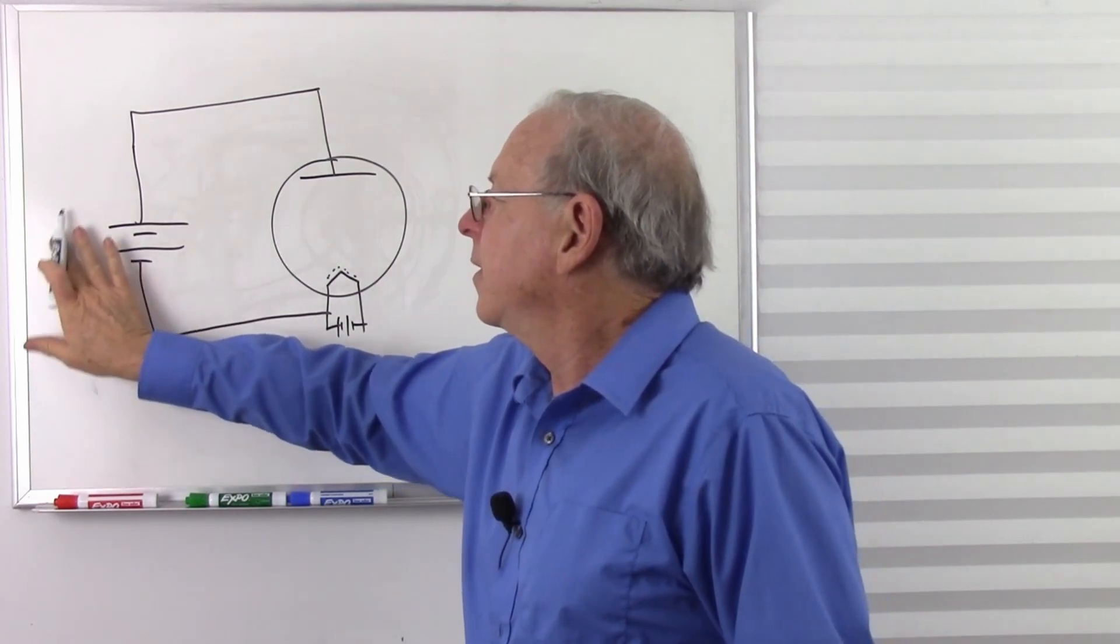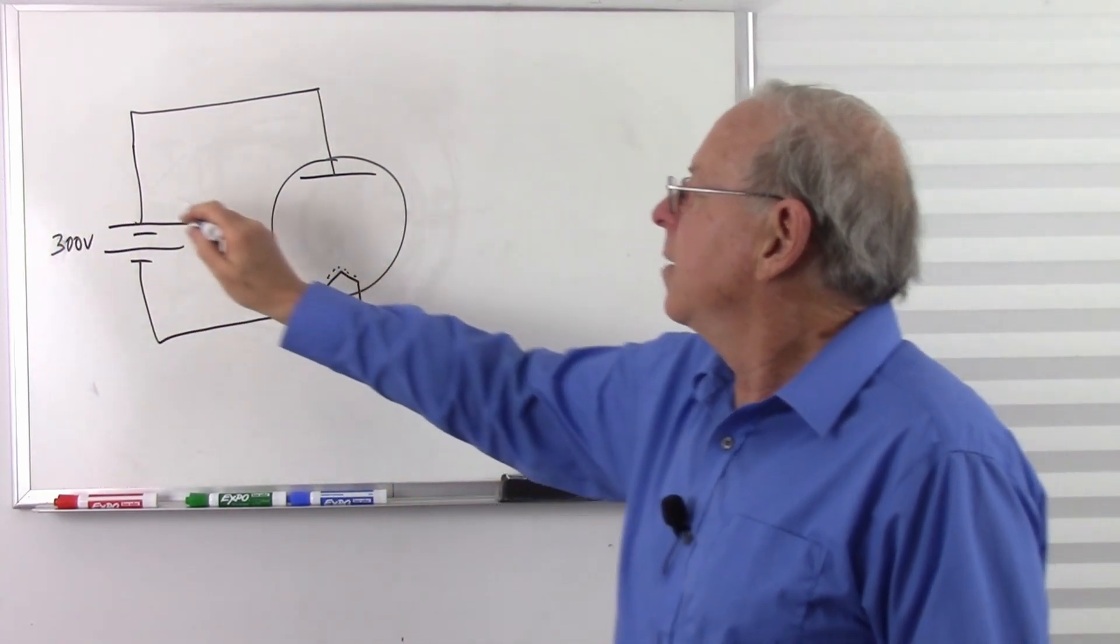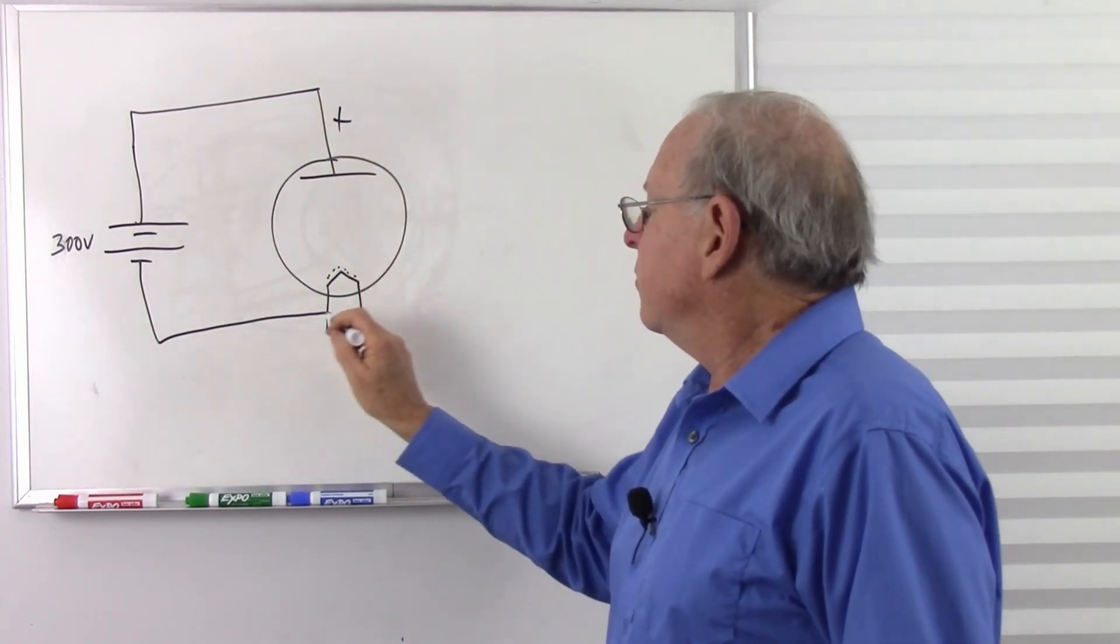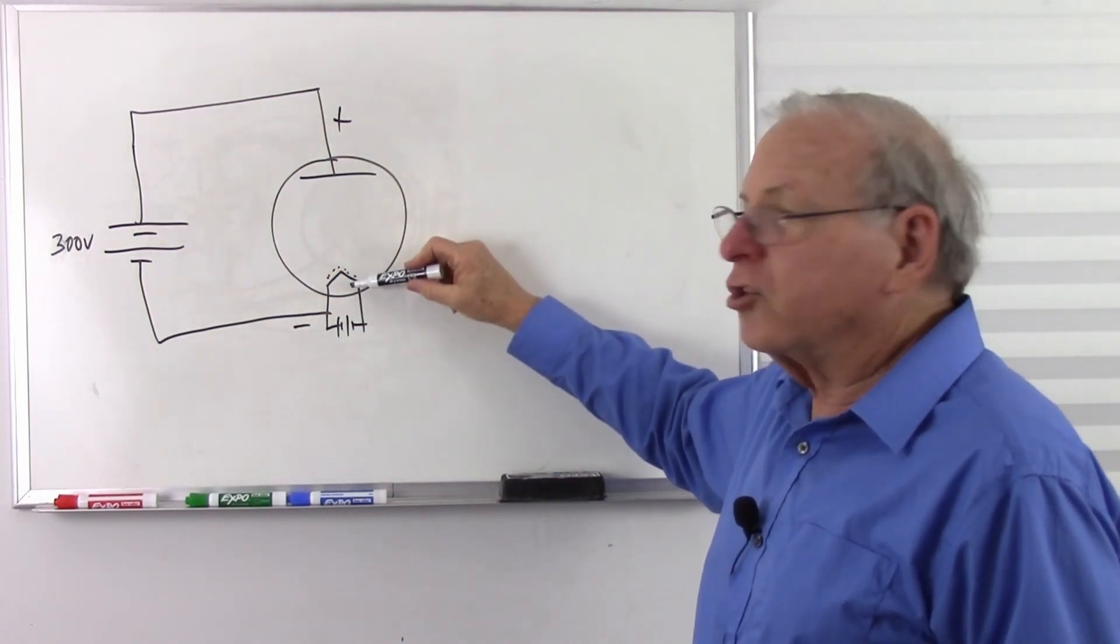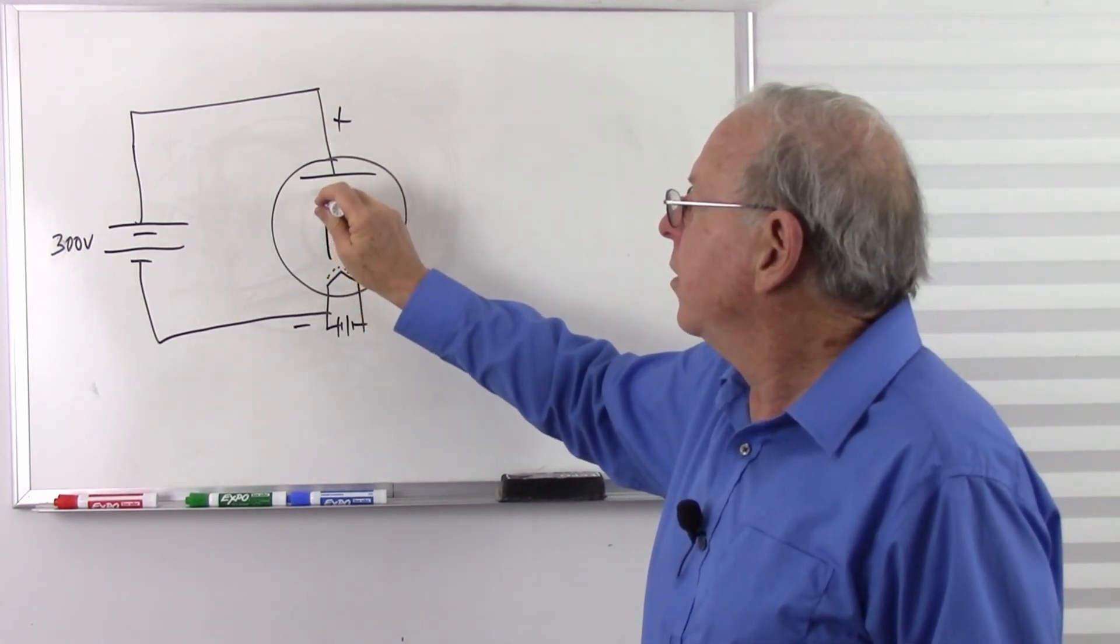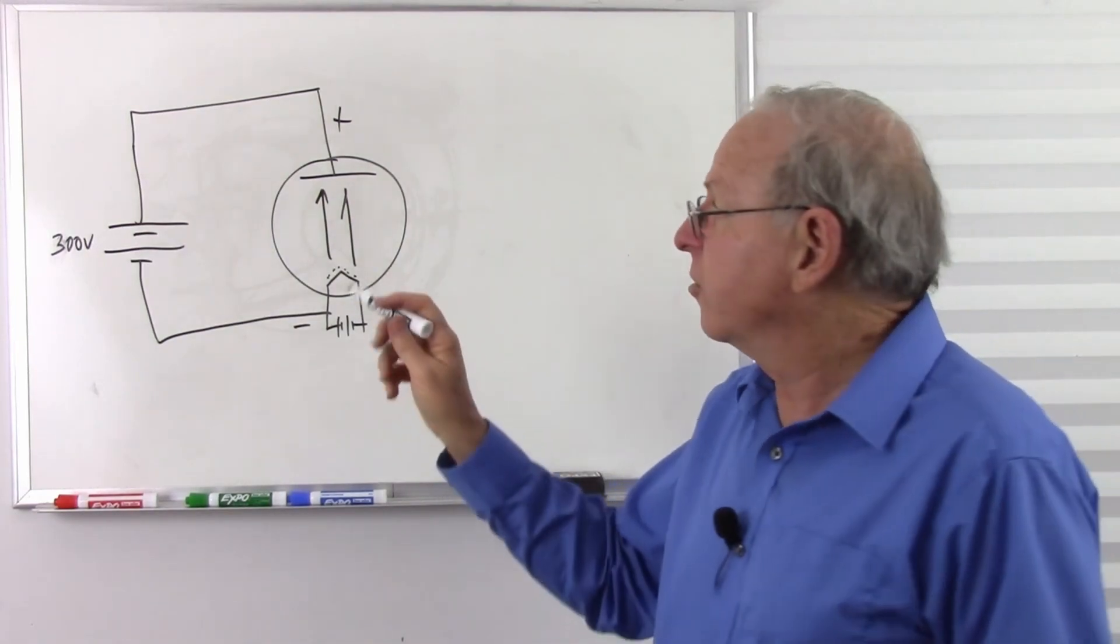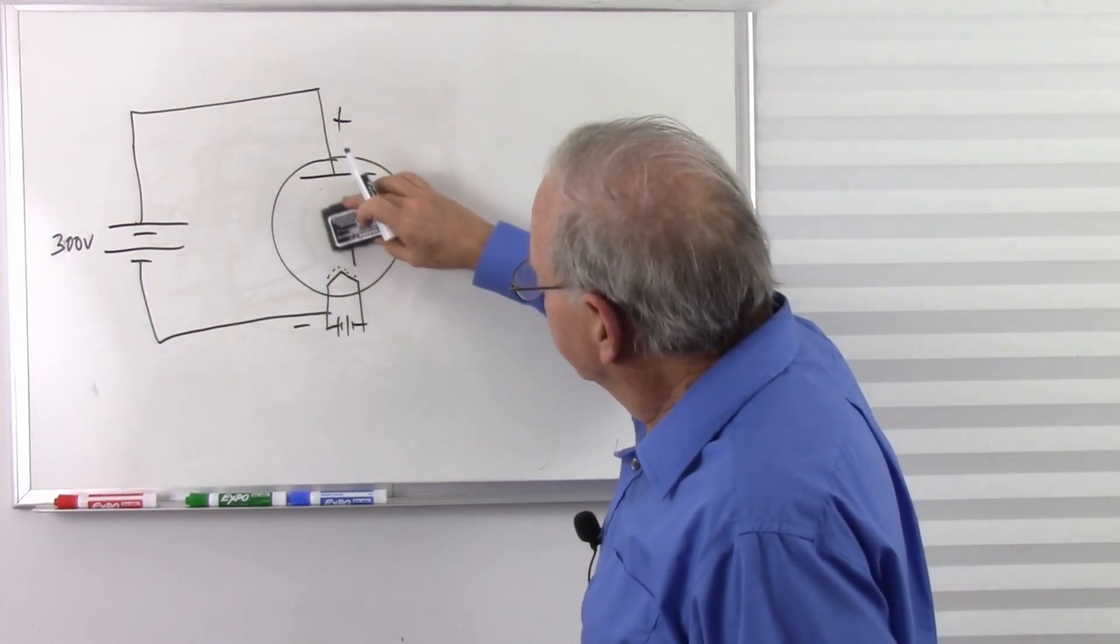How about 300 volts? That's certainly enough to do it. Positive to negative, and now that positive charge is going to attract those electrons through and they're going to flow through that vacuum. Now to make a control circuit for amplification, what we do is make a triode.